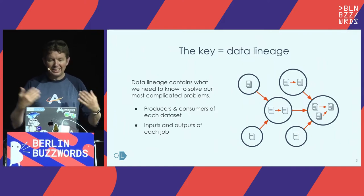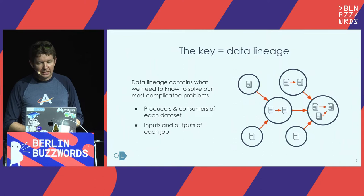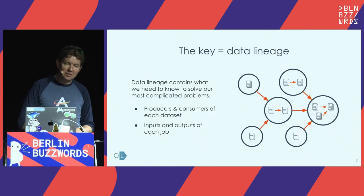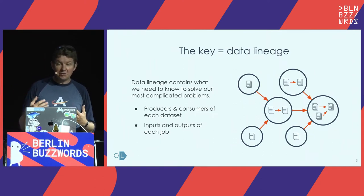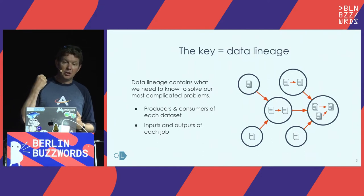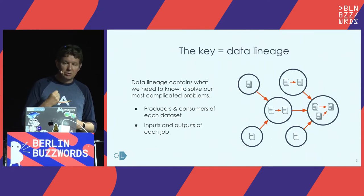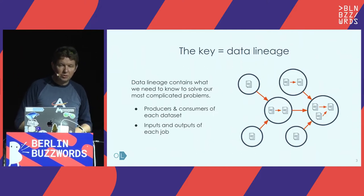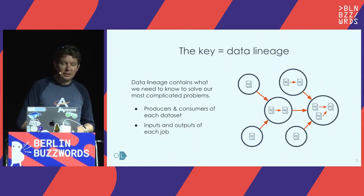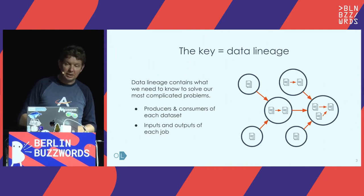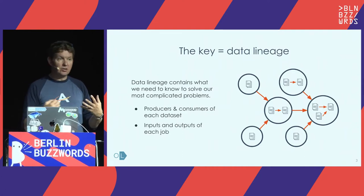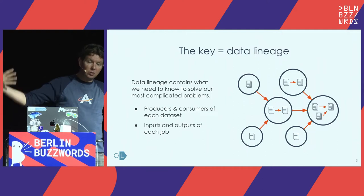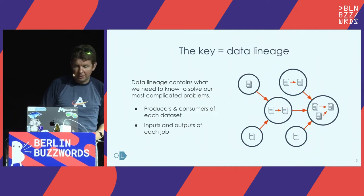Data lineage is the key to enable scaling your usage of data from an organization standpoint. Lineage is really about metadata — what the transformation is, what are the producers and consumers, what data sets are being consumed and produced, and all the related metadata. It helps connect lineage not just for each transformation but connecting all together and building that graph.